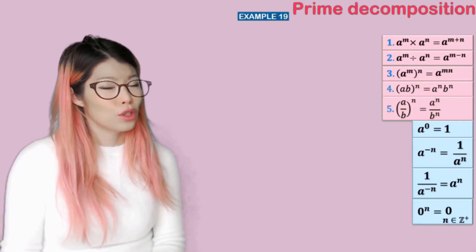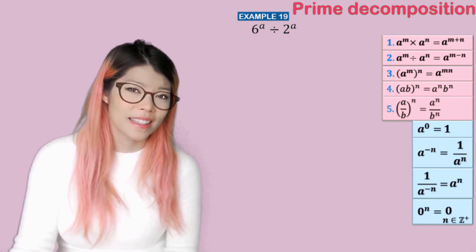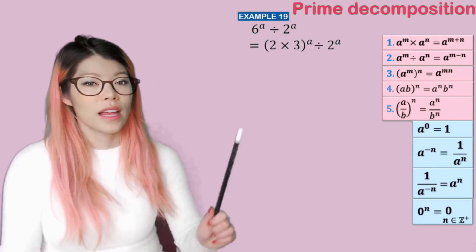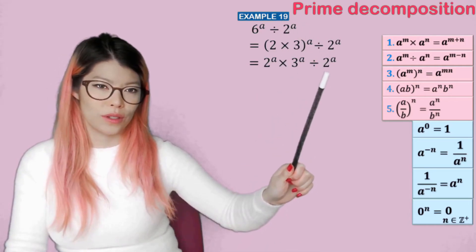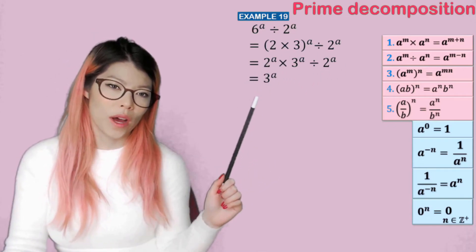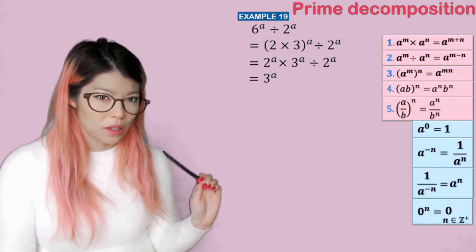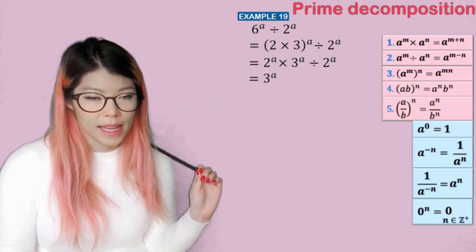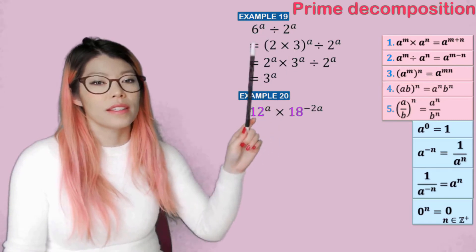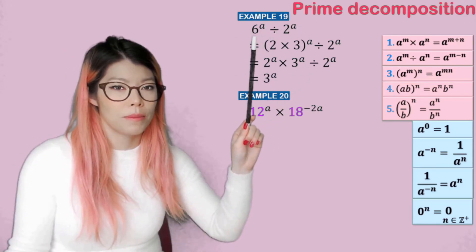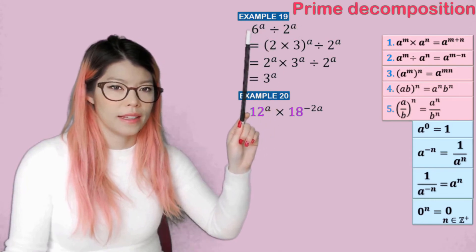Prime decomposition — this is your tree diagram from year seven. So six a divided by two a: another way to write six is two times three, so that is two to the a times three to the a. Then dividing by two to the a means two to the a divided by two to the a is just one, because a minus a is zero, and two to the zero is one. The cool thing about maths is it doesn't matter which way you go, you still end up with the same answer. So six divided by two is just three to the power of a.